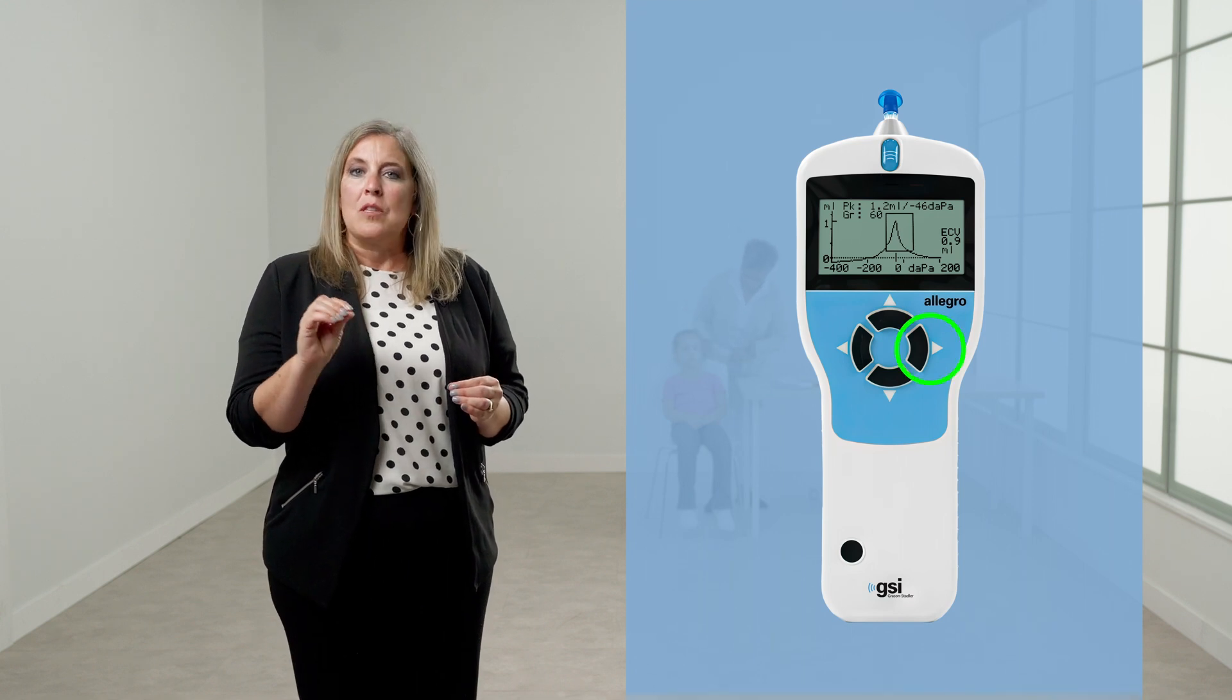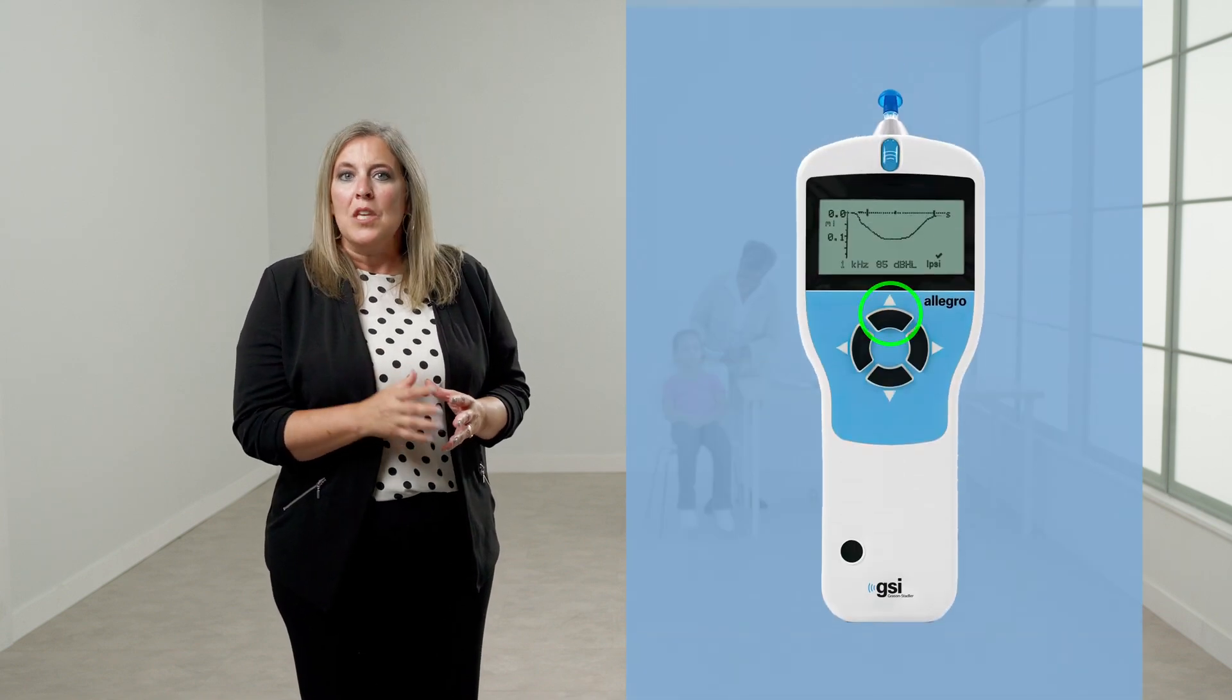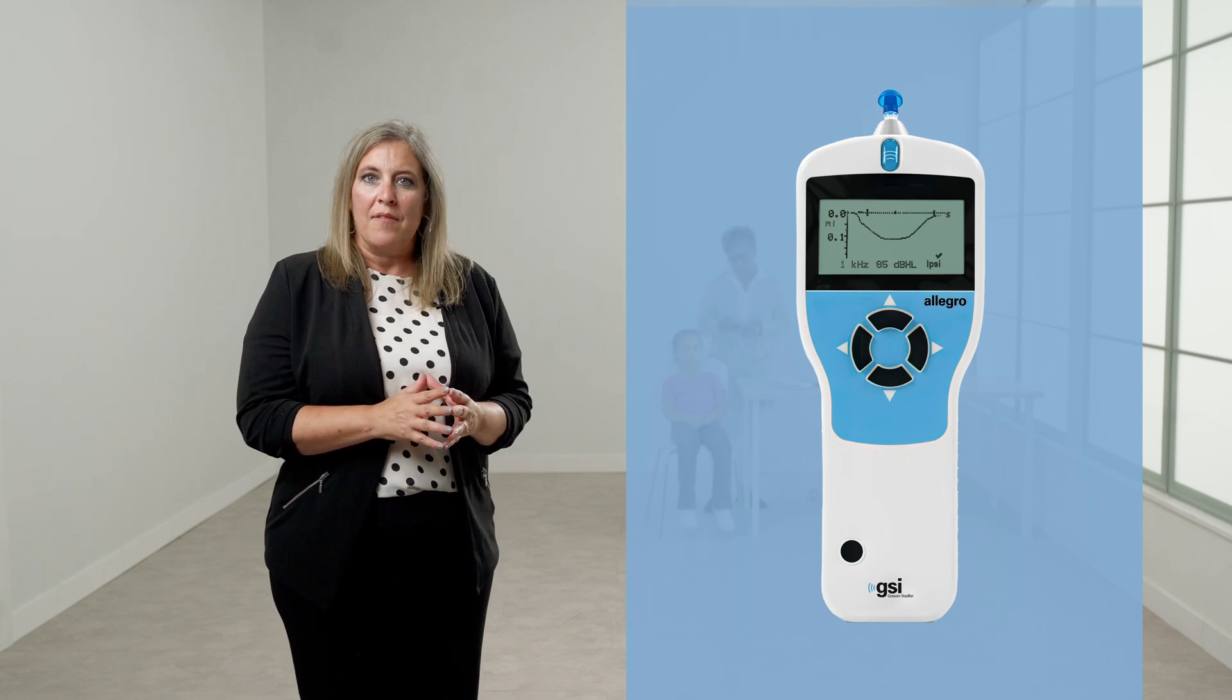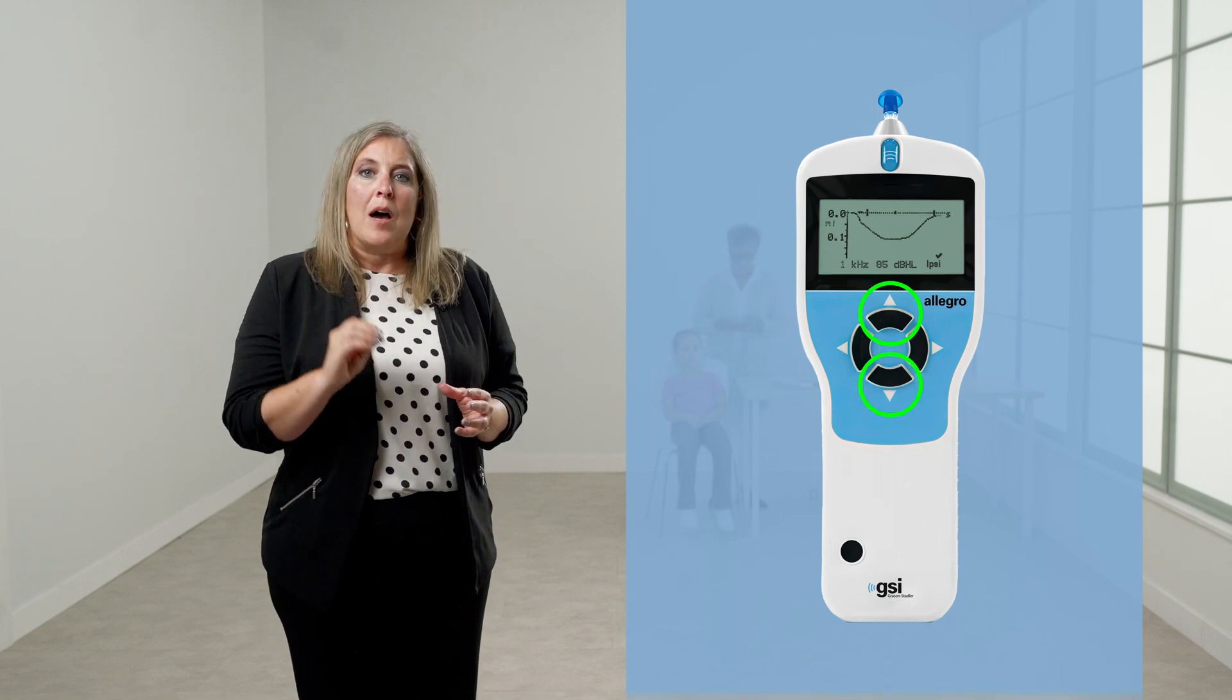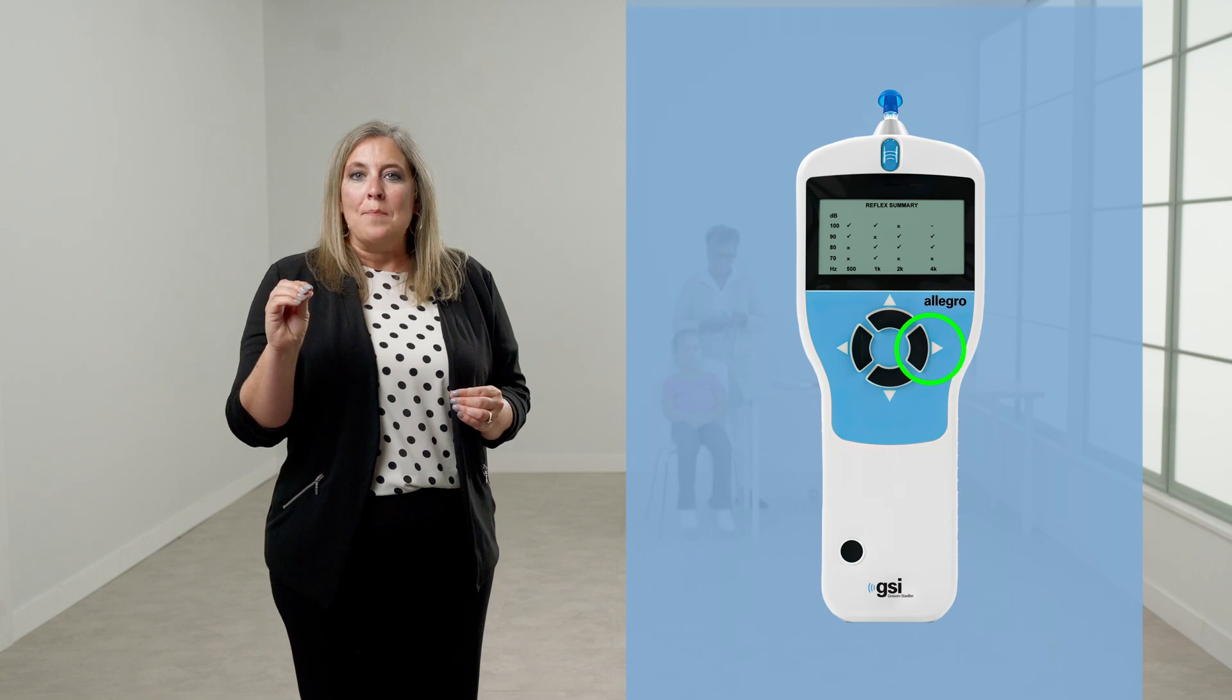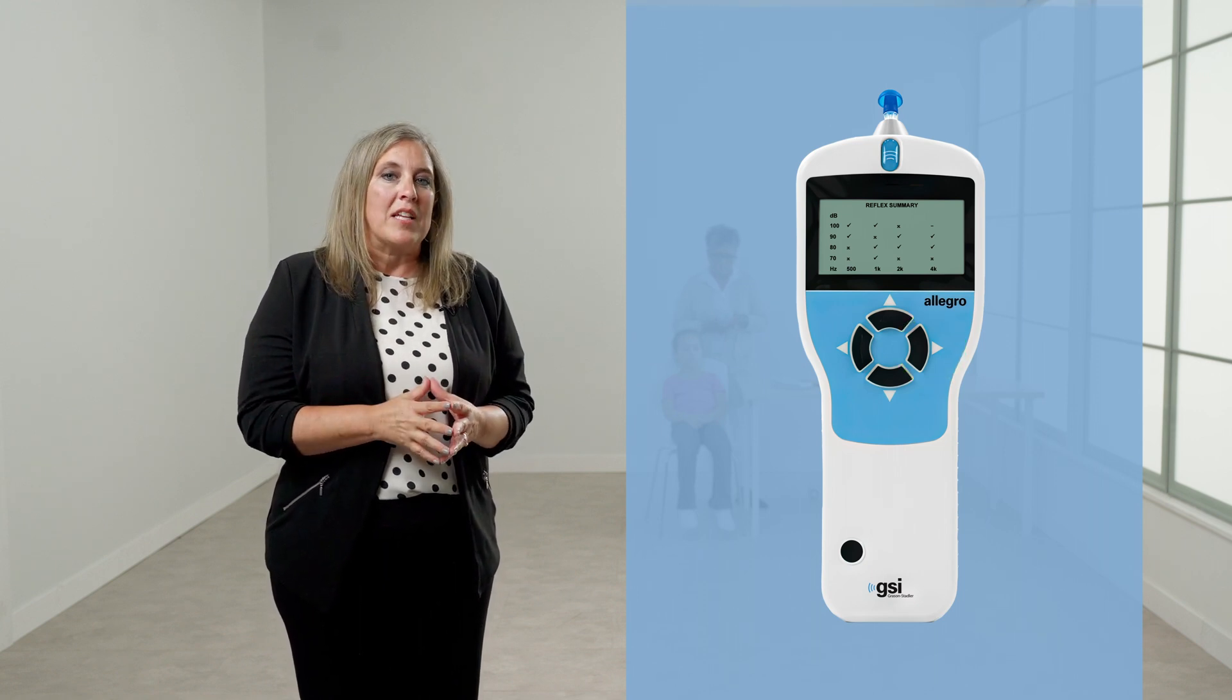Review the tympanogram and press the right button to accept it. If the reflex test was performed, the results will be displayed. Use the up and down buttons to view the results for each of the reflex tone levels used. If the reflex test was performed at more than one frequency, use the up and down buttons to view the results for the additional frequencies. If the Allegro was set to test for a reflex at all levels of the stimulus, press the right button to view a summary of the levels and frequencies at which a reflex was detected.